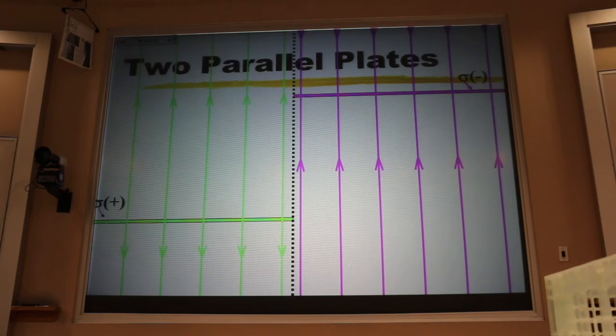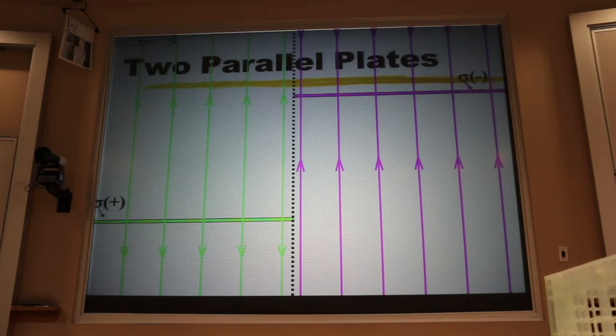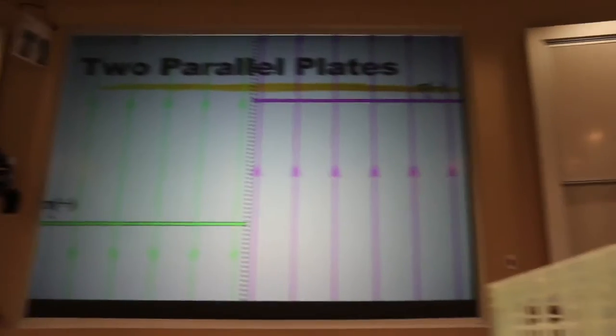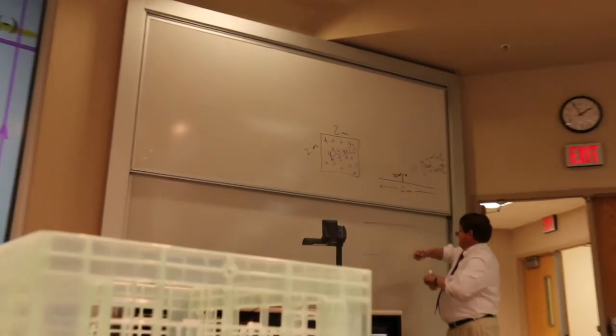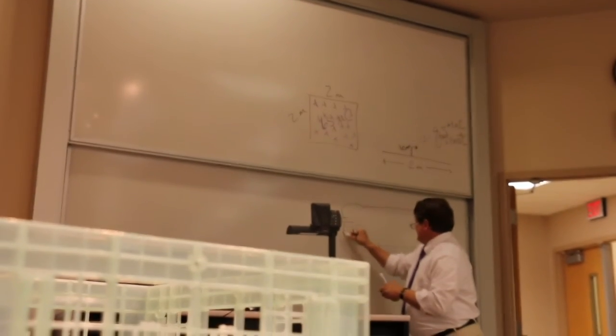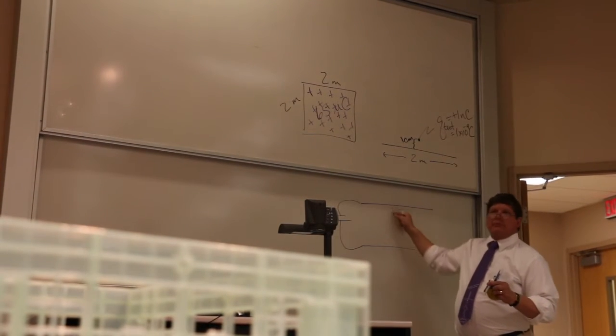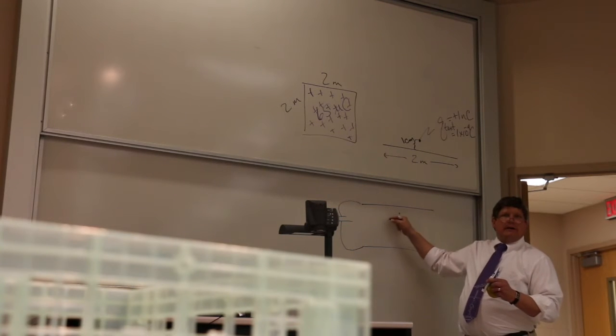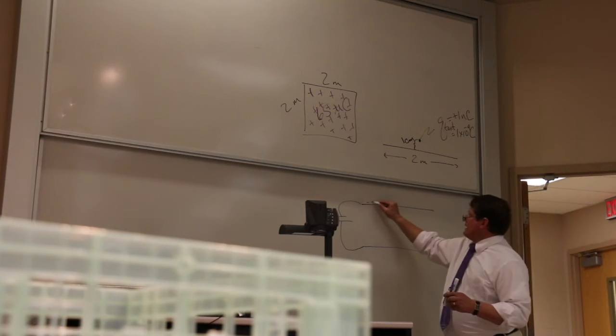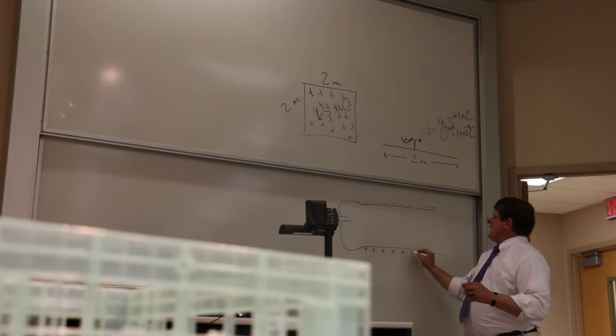And the way we create that is we usually take two metal sheets and we hook them to a battery. And when we hook them to a battery, that battery takes electrons from one of those plates and puts it on the other, and then it takes another electron and puts it over there. So for every electron that I end up with on this plate, it leaves a positive proton behind on the other plate.